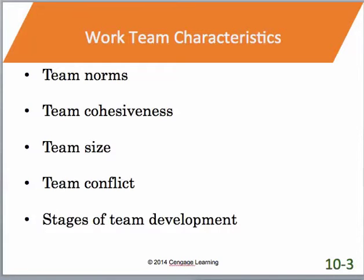Tied into all these teams are what the book calls work team characteristics. Make sure you spend time reading this area in your textbook. One of the main concepts discussed is team norms — simply the agreed-upon standards that everybody is responsible to work by. There should be an understanding about behavior on a team, and this can be either formally or informally developed. You might have been on a team where you were asked to sign a contract agreeing about meeting times or individual contributions.